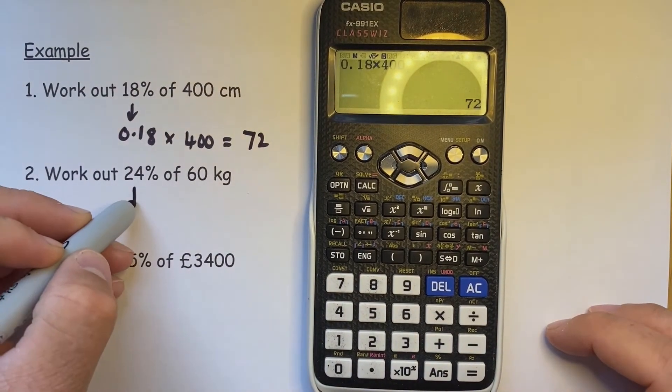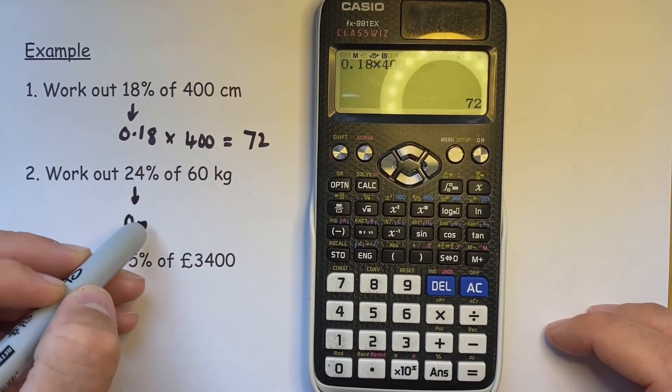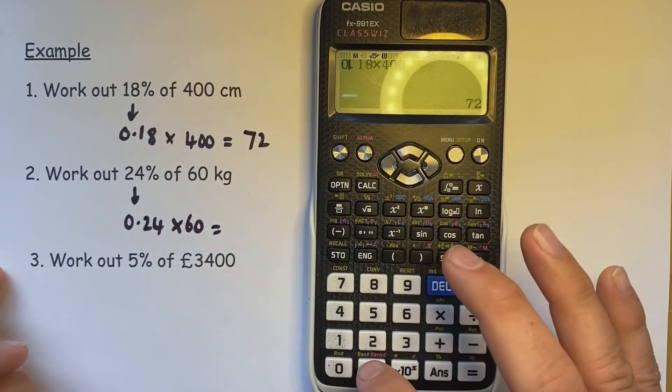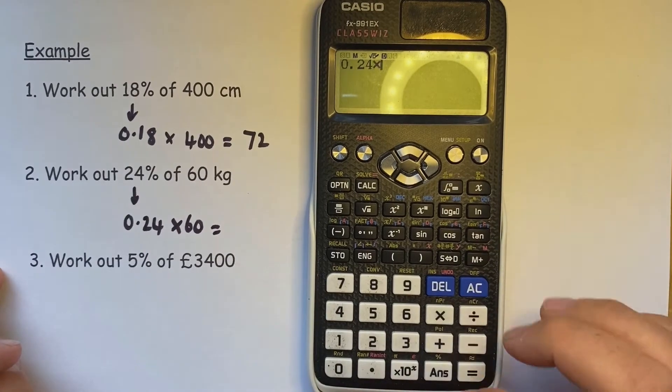Just repeat that. So 24% is 0.24 of 60. So 0.24 times 60.